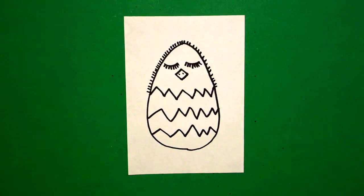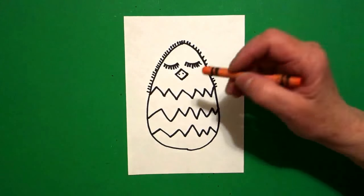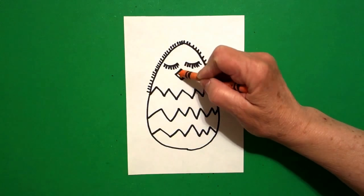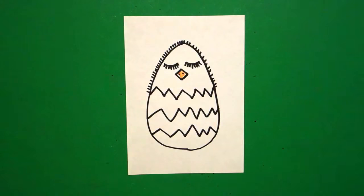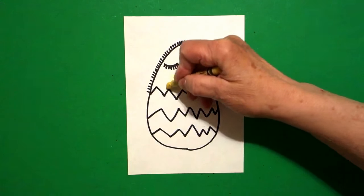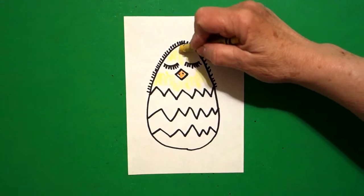Okay, this is super easy to color in. The first thing I'm going to do is use orange for my beak. I'm going to take my yellow and color the whole entire section right here. This is all baby chick.